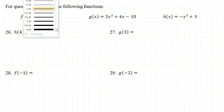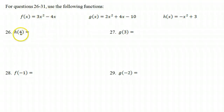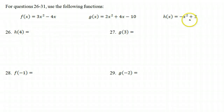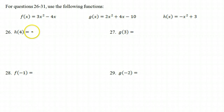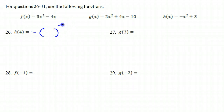If I want to evaluate h at 4, that means I have to use function h. Function h looks like this — it's negative x squared. Notice my use of parentheses. Negative x squared plus 3.